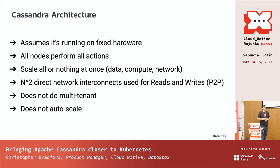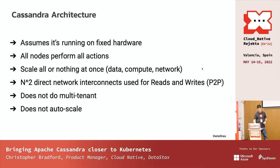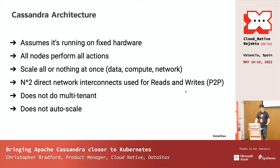Cassandra also does not auto-scale. There are metrics you can watch and you can write some tooling to do automated scaling, but adding and removing nodes can take a bit of time. I've seen nodes that are multiple terabytes in size — adding a new node to that cluster can take over a day. So auto-scaling, while possible, is going to take a significant chunk of time and resources and maybe even some automation that you have to write.